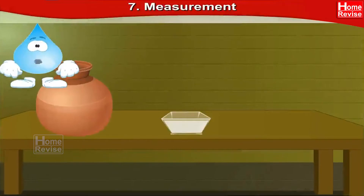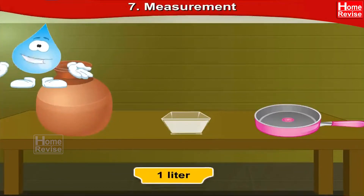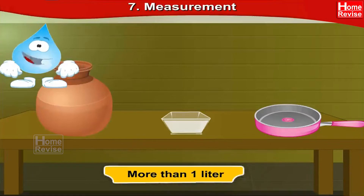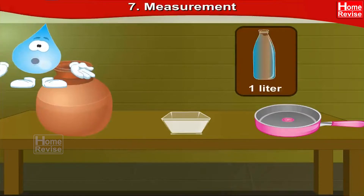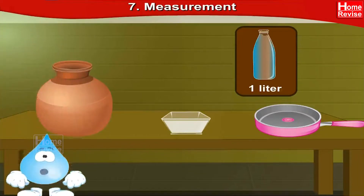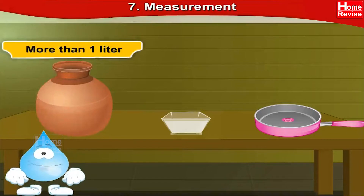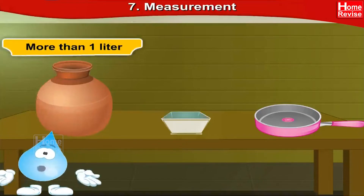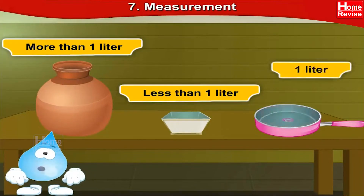Take various vessels such as a pitcher, a box, a pan, etc., and make an estimate of how much water they can hold — one liter, less than one liter, or more than one liter. Verify your guess by actually using a one-liter bottle. The pitcher can hold more than one liter, this box can hold less than one liter, and this pan can hold one liter of water.